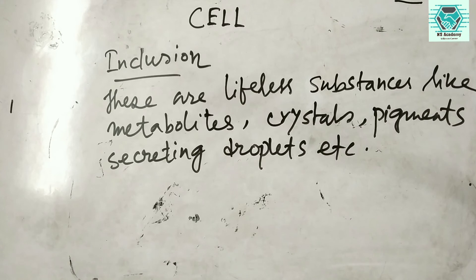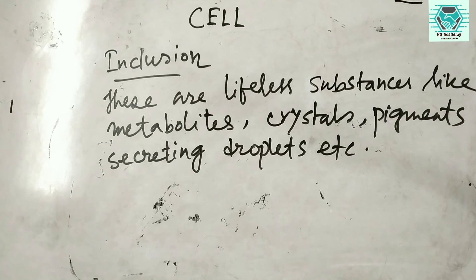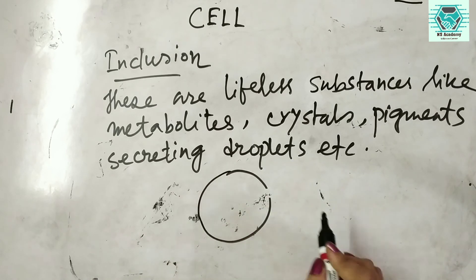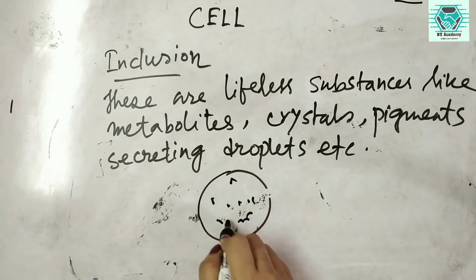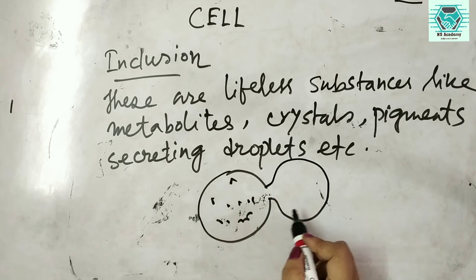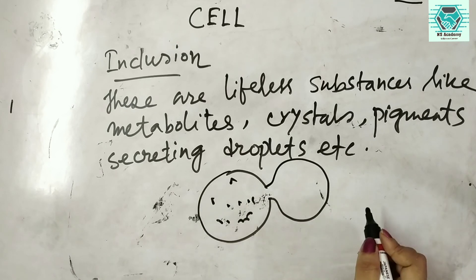The cell membrane is continuous in nature, but in some places it is incomplete and the protoplasm of adjoining cells runs together. Such undifferentiated protoplasm is called syncytium. Generally the cell membrane is a continuous structure, but sometimes it is incomplete and the protoplasm connects with adjoining cells, forming a syncytium — as seen in liver cells.